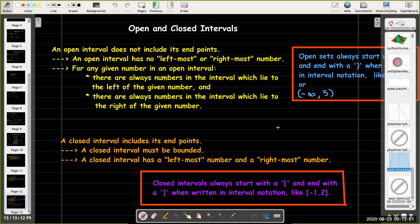When we write closed intervals using interval notation, we will start with an open square bracket and close with a close square bracket.